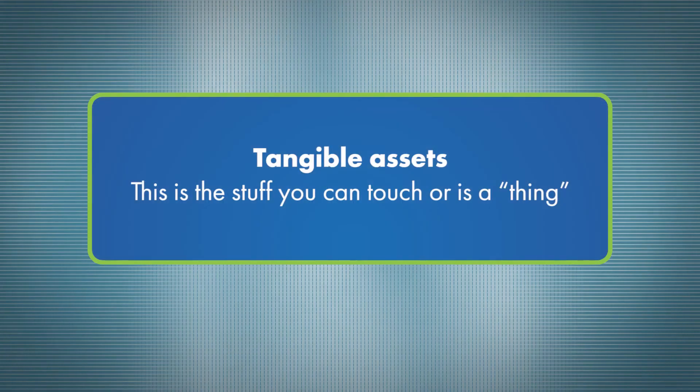Number two, tangible assets. This is the stuff you can touch or is a thing like your buildings, equipment, IT infrastructure, electronic or paper files, and furniture. Your March Madness bracket, although impressive, does not likely belong to this list.